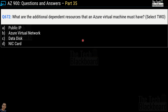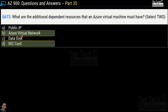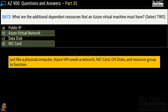Question number 672: what are the additional dependent resources that an Azure virtual machine must have? Select two options. Options are public IP, Azure Virtual Network, data disk, and NIC or Network Interface Card. The two correct options are option B, Azure Virtual Network, and option D, NIC Card. Just like a physical computer, Azure virtual machines also need a network, a NIC card, an operating system disk, and resource groups to function.